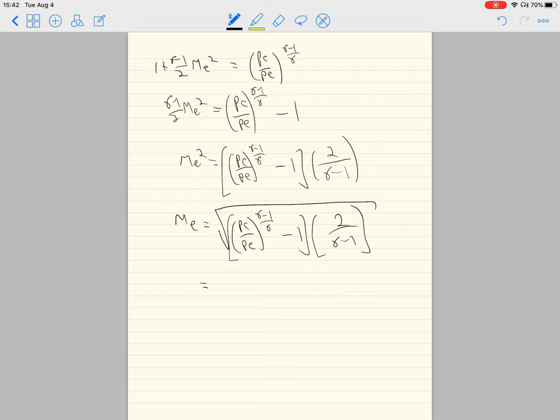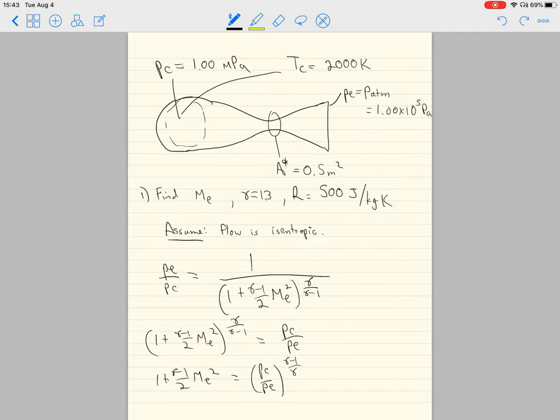Putting in all the values for the problem: PC/PE is simply 10 (a million over 100,000) to the power of 0.3 divided by 1.3, minus 1. This term is 0.70125, and 2 divided by 0.3 is 6.67. Multiplying those numbers together and taking the square root, I get that the exit Mach number is 2.16.